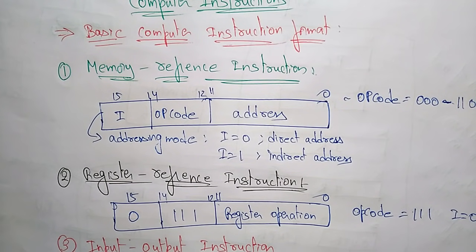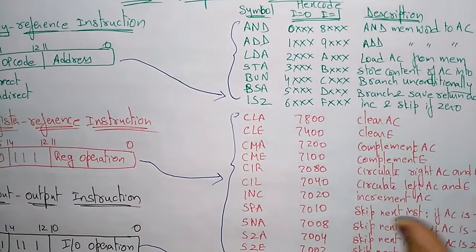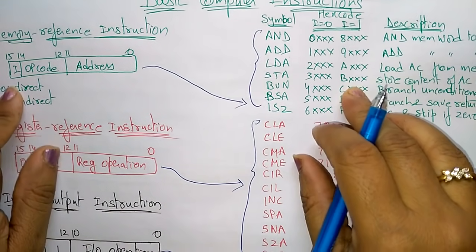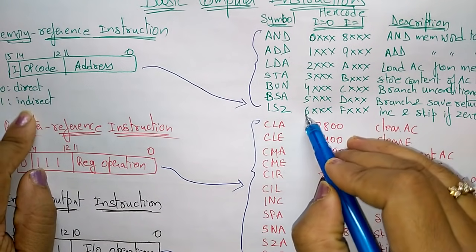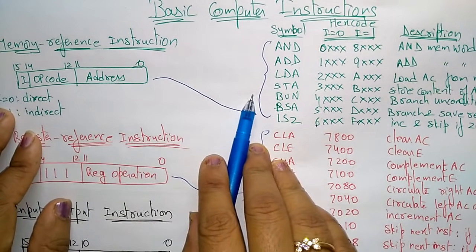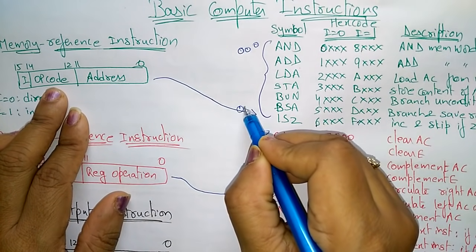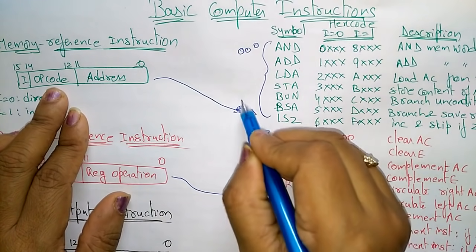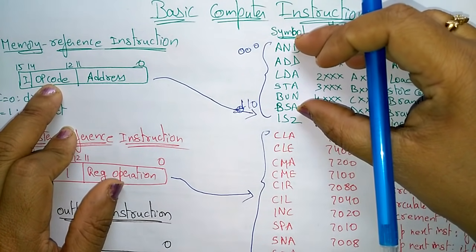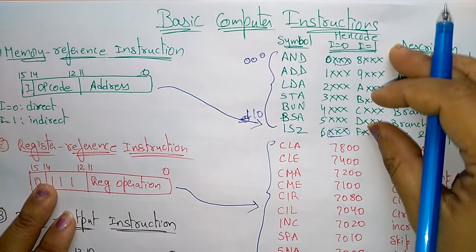Now let us see what instructions are stored in these formats. The I-bit being 0 or 1 indicates direct or indirect addressing. In hexadecimal, 0 to 6 indicates direct addressing and 8 to E indicates indirect addressing. Memory reference instructions hold opcodes from 000 to 110, shown here in green.